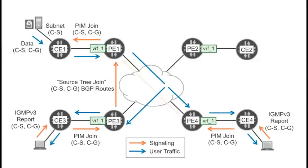As an alternative to inclusive tunnels, selective tunnels provide optimal data transport. With selective tunnels, the C-multicast traffic is only sent to the PEs that are actively requesting it. This comes at the expense of more signaling.